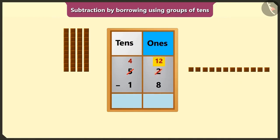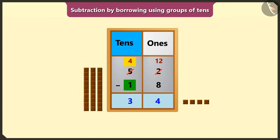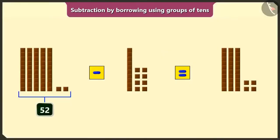Now, if we subtract 8 ones from 12 ones, we will have 1, 2, 3 and 4 left. So, we will write 4 in the place of ones. Now, we have to subtract the numbers of the tens place. If we subtract 1 ten from 4 tens, we will get 3 tens. So, we will write 3 in the place of tens. After eating 18 chocolates from 52 chocolates, we would have 34 chocolates left.